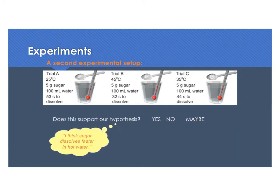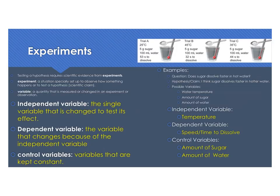Now we have some results from a new experiment. Here's some new times to dissolve, and now the question is: does this support our hypothesis? In this case, trial B is the warmest, trial A is the coolest. Everything else is controlled. We're going to say, 45 is 32 seconds, 35 is 44 seconds, 25 is 53 seconds. Yes, now we can see that a higher temperature makes things dissolve faster. I think sugar dissolves faster in hot water. We now have evidence to support that claim.